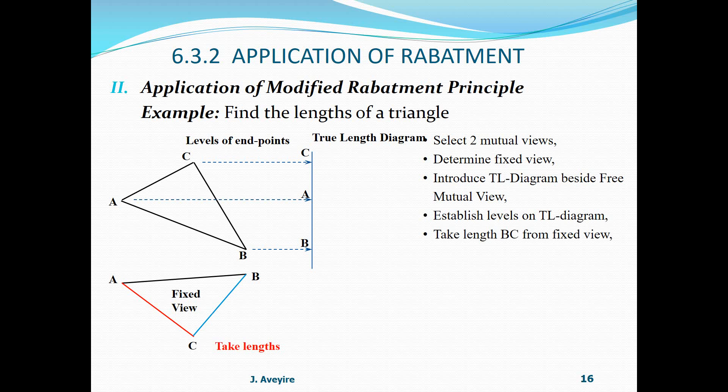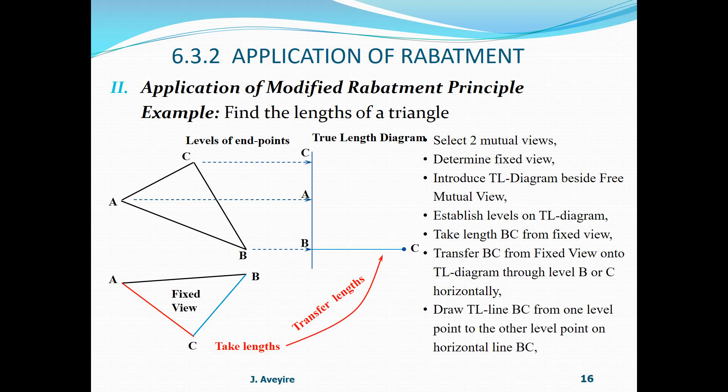Transfer BC from the fixed view onto TL diagram, to level B or C horizontally. Now draw the TL line BC from one level point to the other level point on the horizontal line. So from level C to level B, that gives us the true length of BC.